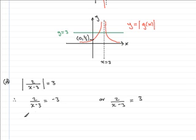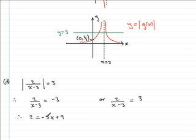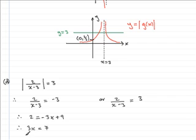Solving the first equation: multiplying both sides by x minus 3 gives 2 equals minus 3 times x minus 3, in other words minus 3x plus 9. Rearranging — adding 3x to both sides and subtracting 2 — gives 3x equals 7, and so therefore x equals 7 over 3, or 7 thirds.